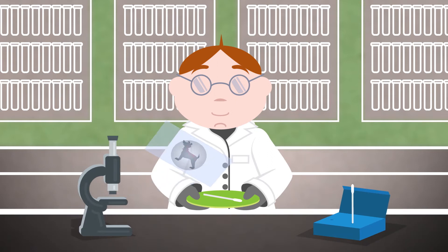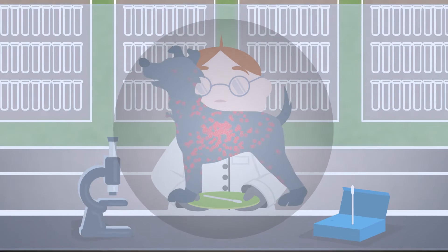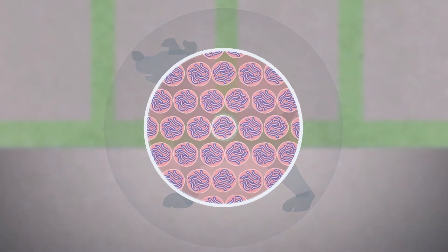Genetic scientists then look at hundreds of different markers within the DNA. Each marker is a key to your dog's genetic code.